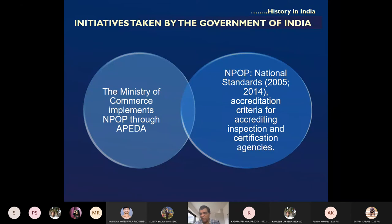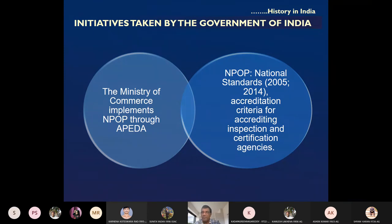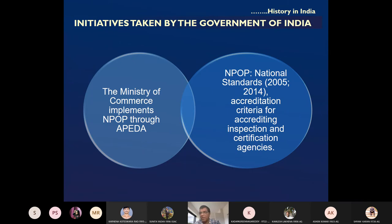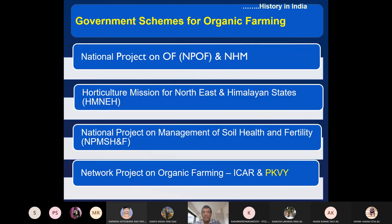APEDA has developed national organic standards — the do's and don'ts of organic production, processing, transport, and marketing. Revised organic standards are available with APEDA. Accreditation means authorizing a particular agency to start certification, with certain criteria so that a company or group of people can be authorized to do the certification. Various government organic schemes were also launched — some dealing directly with organic farming, some indirectly.